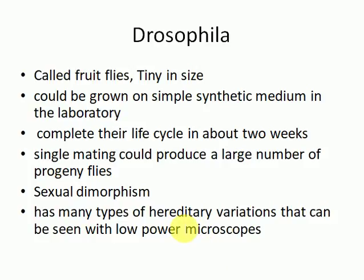So there are different kinds of advantages of Drosophila: first, its short life cycle; second, it can be grown easily in synthetic medium; third, their progenies are quite large in number, which is very important for precise results; and fourth, sexual dimorphism is seen in them — we can easily distinguish between the male fly and the female fly.